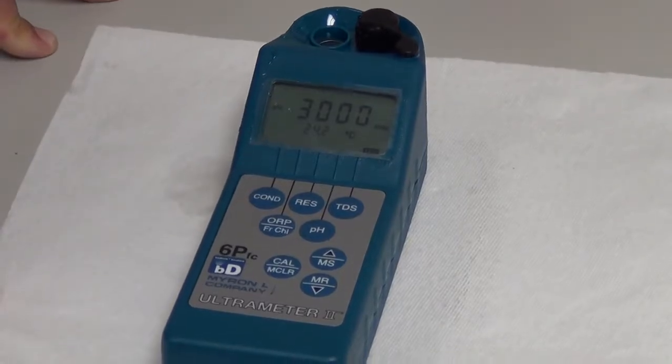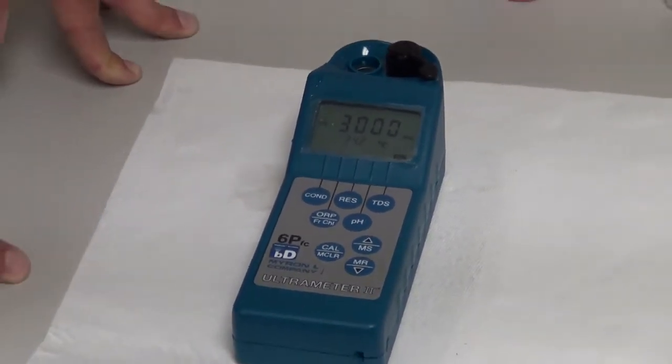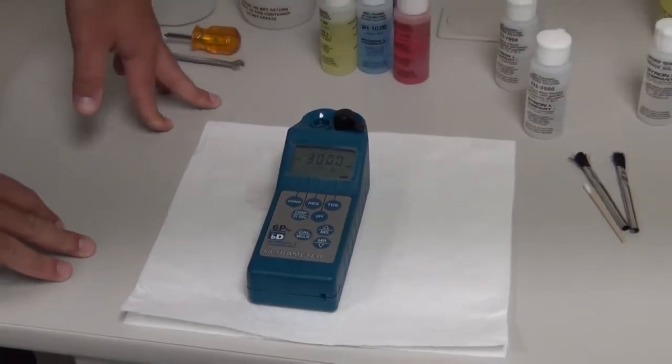We've now calibrated TDS function. Again, you want to make sure and rinse the cell cup out real good once you're done.